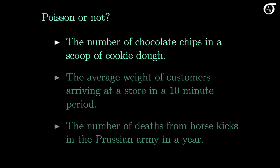Would the number of chocolate chips in a randomly selected scoop of cookie dough have a Poisson distribution? Well, here we're counting up the number of events — the number of chocolate chips — in a volume of cookie dough, so that condition of the Poisson is satisfied. And if the cookie dough is mixed up really well, so that the chocolate chips are distributed randomly and independently throughout the cookie dough, then the Poisson model would probably be pretty good. So depending on the specifics of the situation, the Poisson model might be very reasonable.